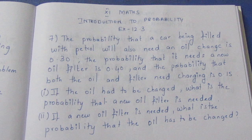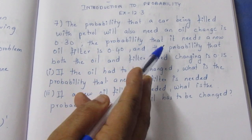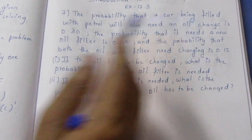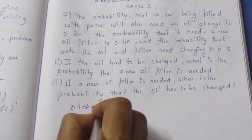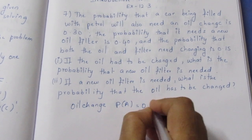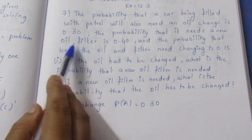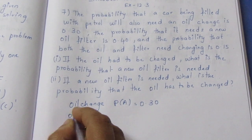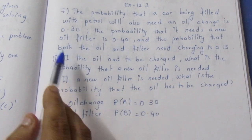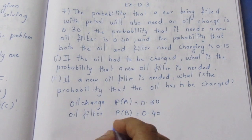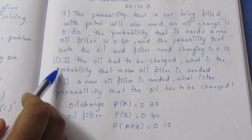The probability that a car being filled with petrol will also need an oil change is 0.30. The oil change probability A is 0.30. The probability that it needs a new oil filter, B, is 0.40. And the probability of both — the intersection of oil change and oil filter — is 0.15.